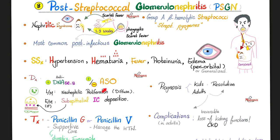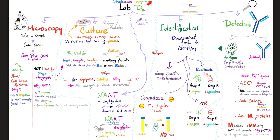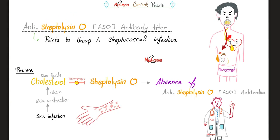For diagnosis, we use anti-ASO antibodies and anti-DNase antibodies. Anti-DNase antibodies will be present. Anti-ASO might or might not be present in kidney disease — why not? We'll explain this soon. When you're looking for an antibody, this is called the detection method of lab diagnosis for the bacterial infection. Anti-ASO will be positive in rheumatic fever, but may or may not be positive in acute post-streptococcal glomerulonephritis.